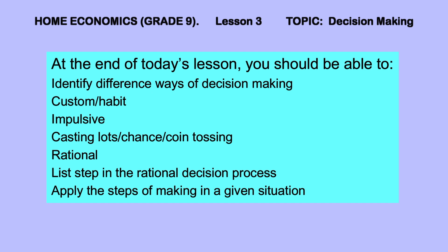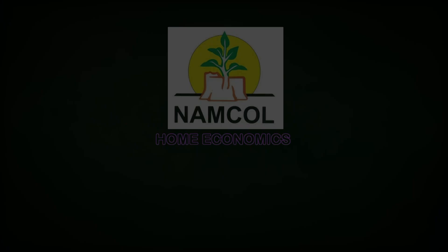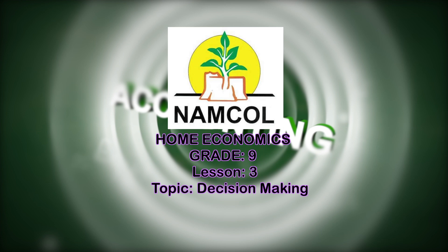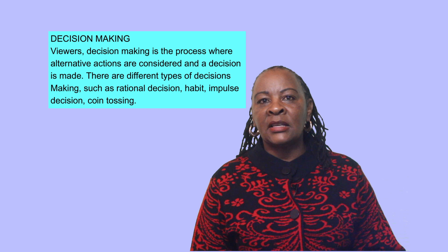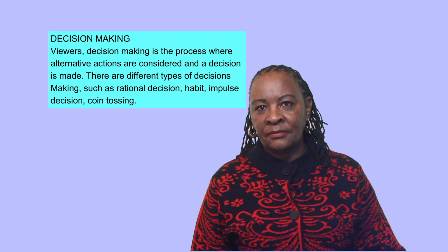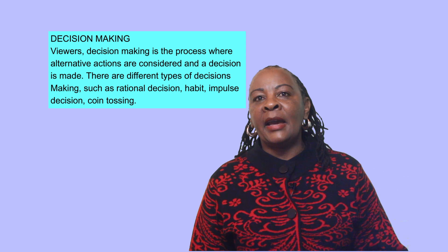Decision making is the process where alternative actions are considered and a decision is made. There are different types of decisions such as rational, habitual, impulsive, and coin tossing.